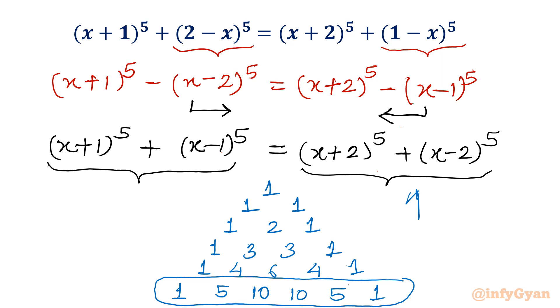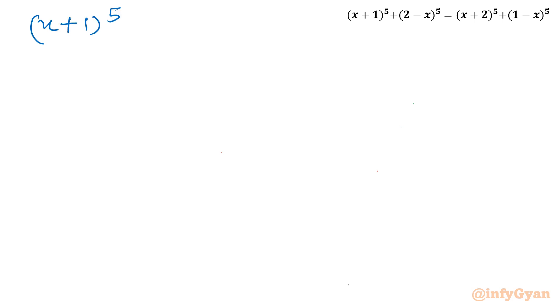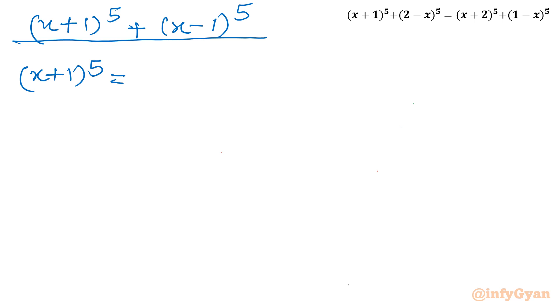I will use this expansion for both sides respectively. Let us consider the LHS first: (x + 1)^5 + (x - 1)^5. Let me write out the expansion of (x + 1)^5. The coefficients are 1, 5, 10, 10, 5, 1.